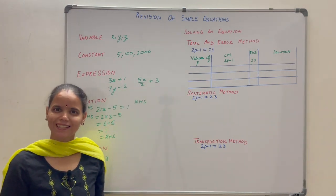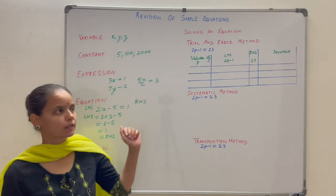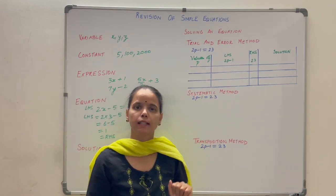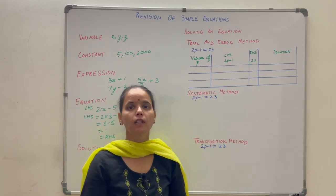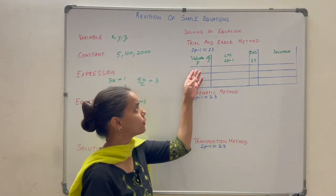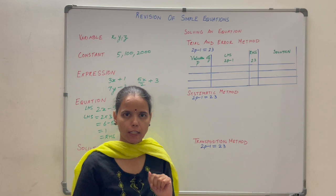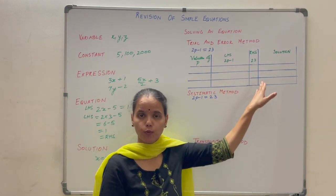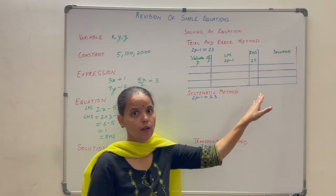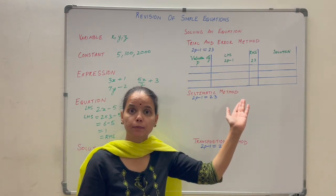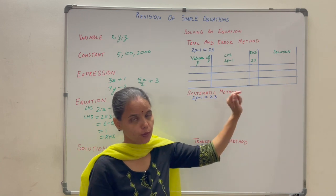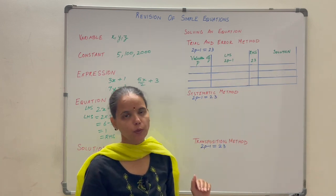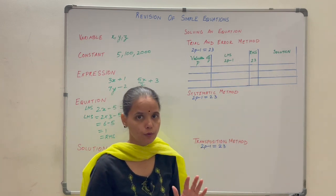Now let us see how to solve an equation. The first method is trial and error method. Here we keep putting different values of the variable and check whether the left hand side equals the right hand side. When LHS equals RHS, that is the solution and we stop.